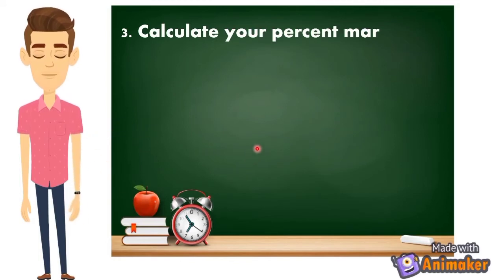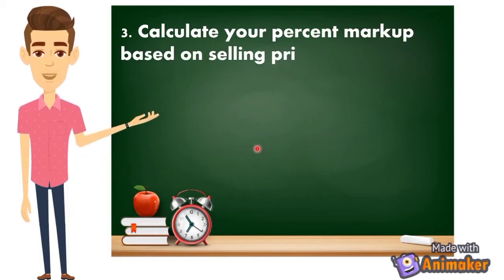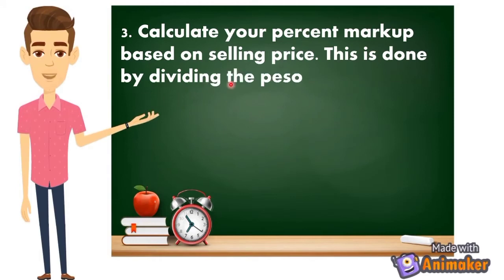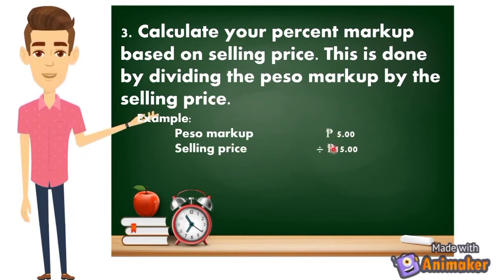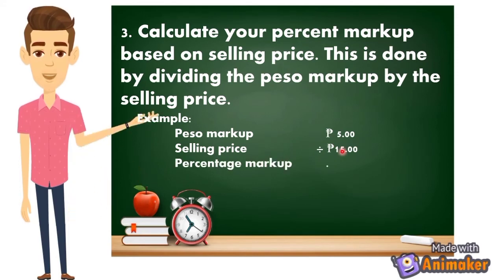Step A3: calculate your percentage markup based on selling price. This is done by dividing the peso markup by the selling price. We have a peso markup of 5 pesos and a selling price of 15 pesos. So 5 divided by 15 equals 0.33, or 33 percent, which is the percentage markup based on the selling price.